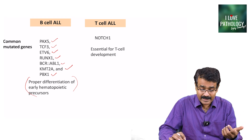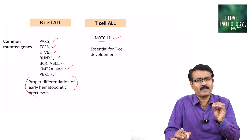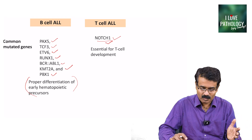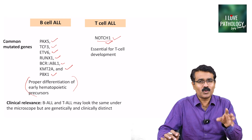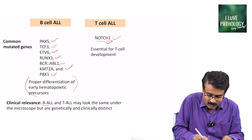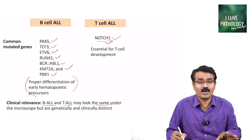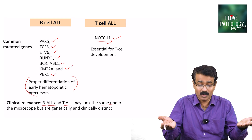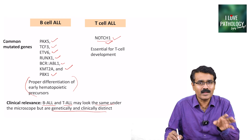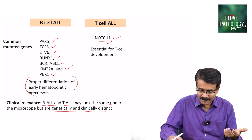The gene involved in T cell ALL is the NOTCH1 gene, which is normally essential for T cell development. Whenever there is a mutation of this gene, it results in T cell acute lymphoblastic leukemia or lymphoma. We need to know the differences between genes involved in B cell and T cell ALL because both resemble each other morphologically — they look similar under peripheral blood smear or bone marrow examination — but they are genetically and clinically distinct. B-ALL occurs in childhood whereas T-ALL manifests in adolescence.